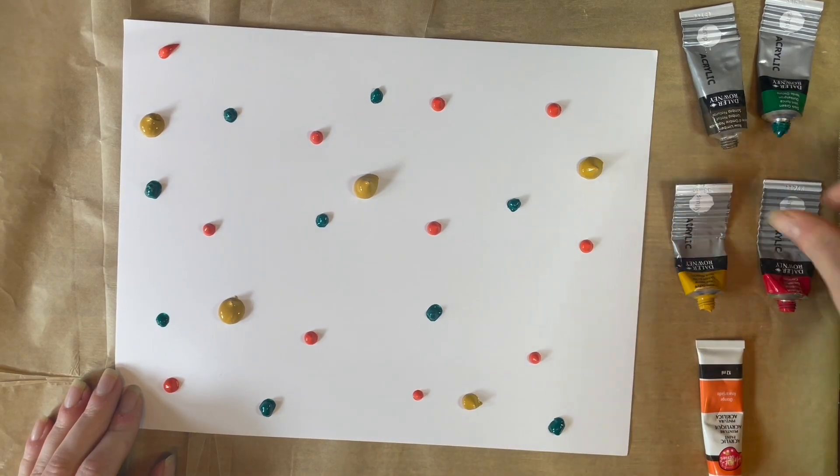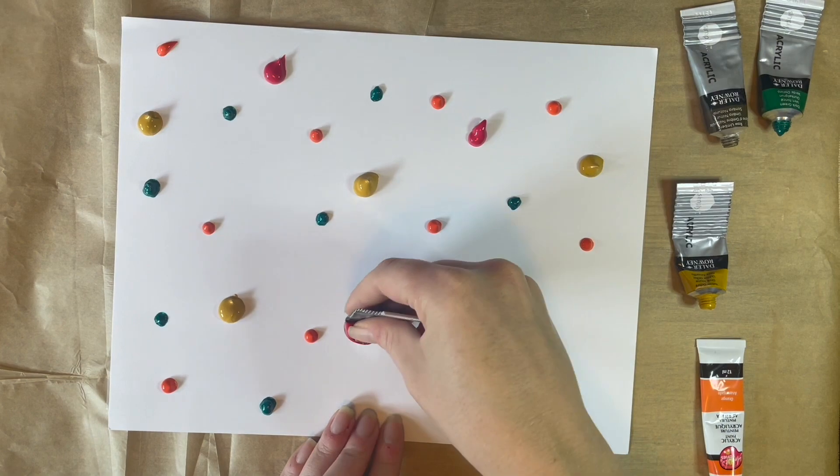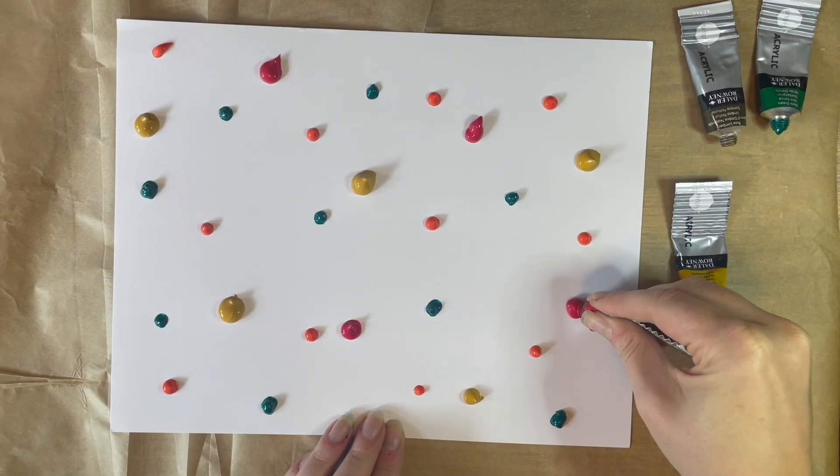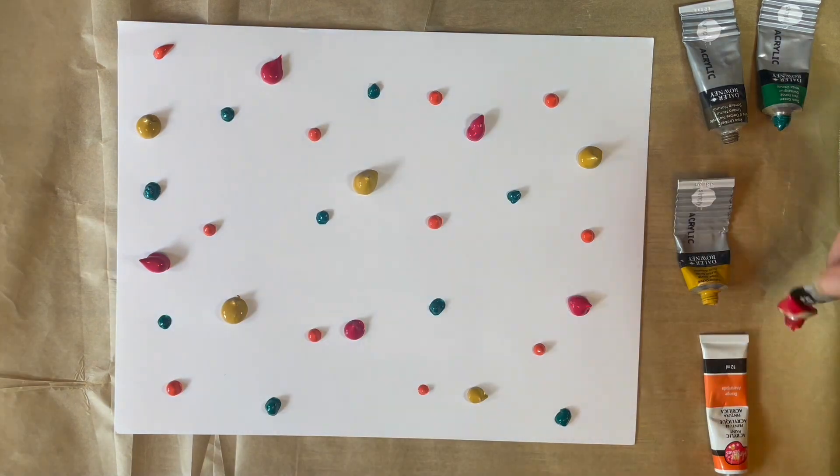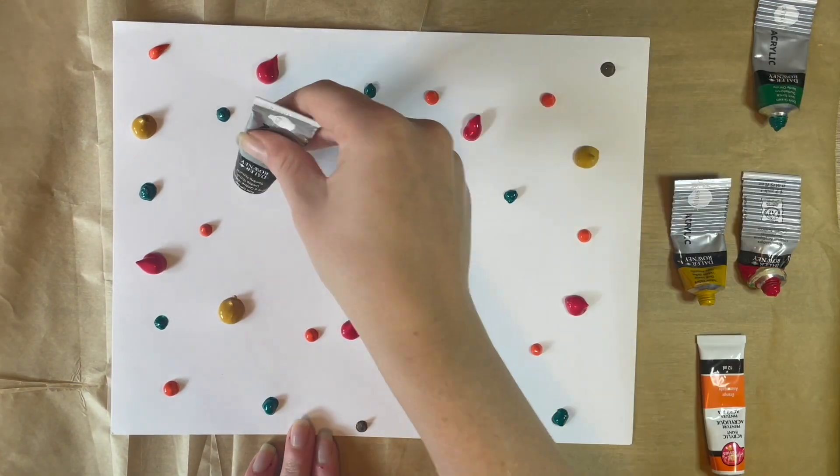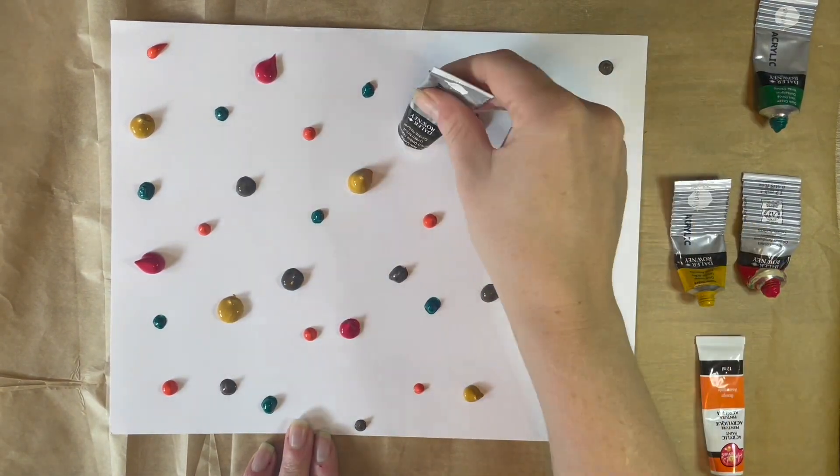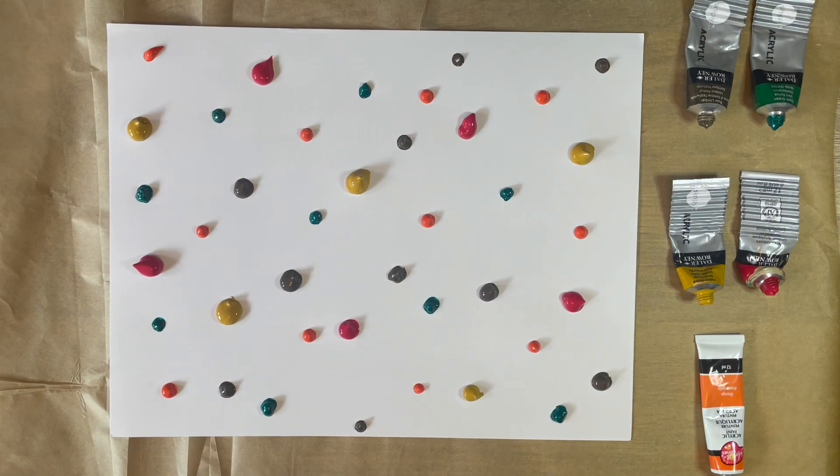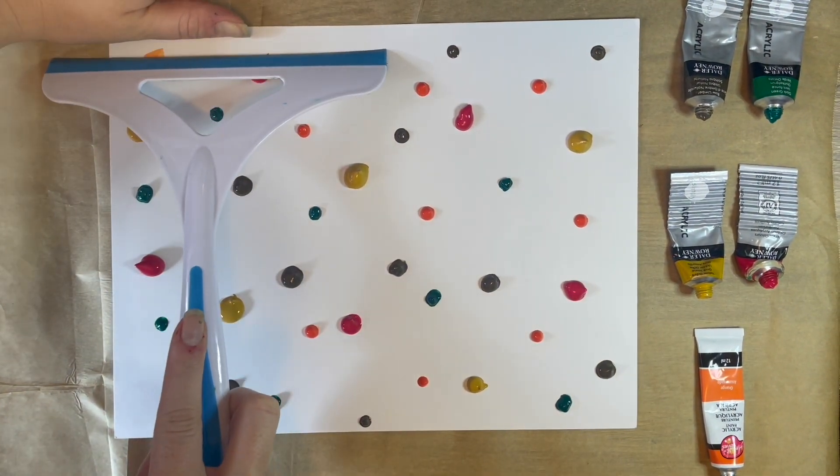And remember these little dots do show up at the very end. So it does add some very interesting texture to the picture. So again, just going through adding some more dots. And then we are going to do the same process. Hold down the piece of paper at the top, or you can tape it down with some painter's tape, and then drag the squeegee down as straight as possible down your page.